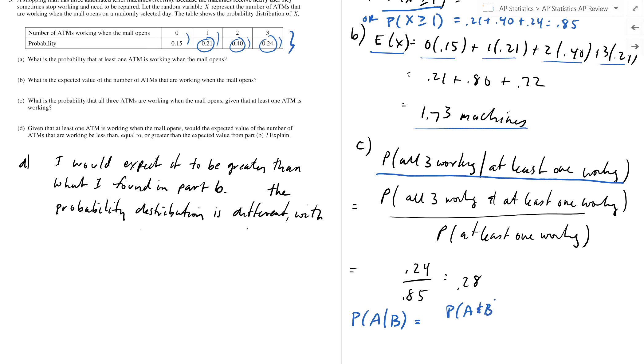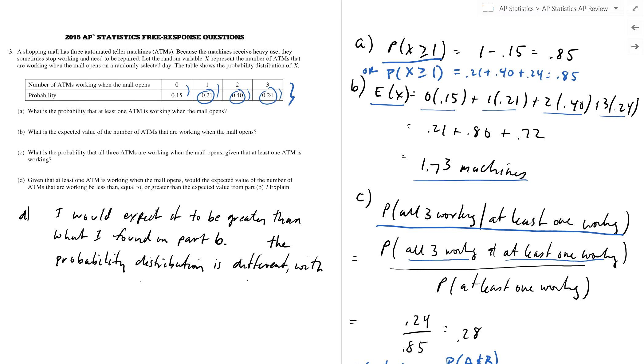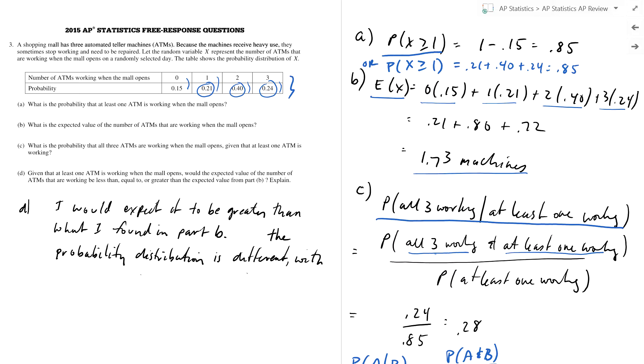So this is the probability that all three are working and at least one is working. Well, what's the probability that all three are working and at least one is working? Well, that's just the probability that all three are working. And what's the probability that all three are working? 0.24.